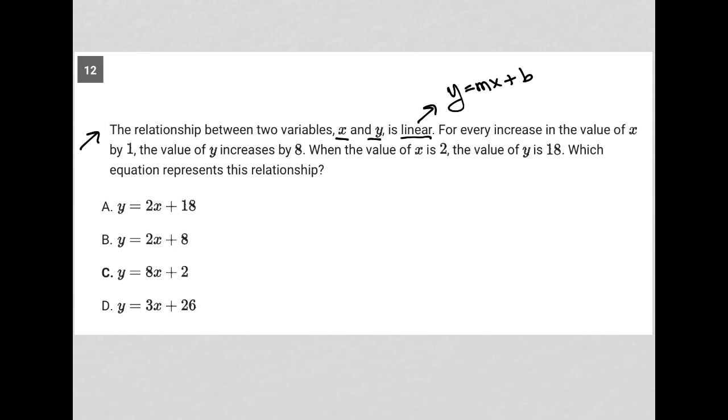The next sentence says for every increase in the value of x by 1, the value of y increases by 8. That actually is telling us our slope. The slope is the change in y, delta y, divided by change in x. The question tells us that our change in y is equal to 8 for our change in x equaling 1. Therefore, our slope is simply equal to 8.